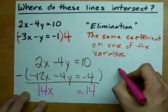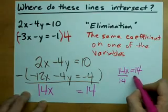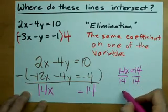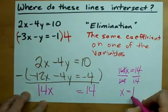So now I'm just dealing with 14x equals 14. That's easy to solve. Just divide both sides by what's in front of x. See it cancels out. x turns out to be 1.